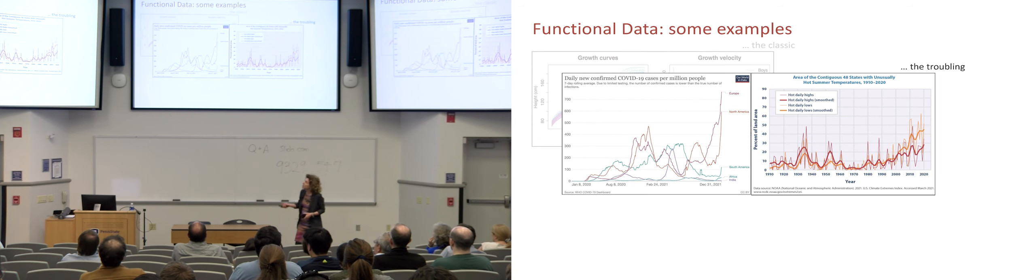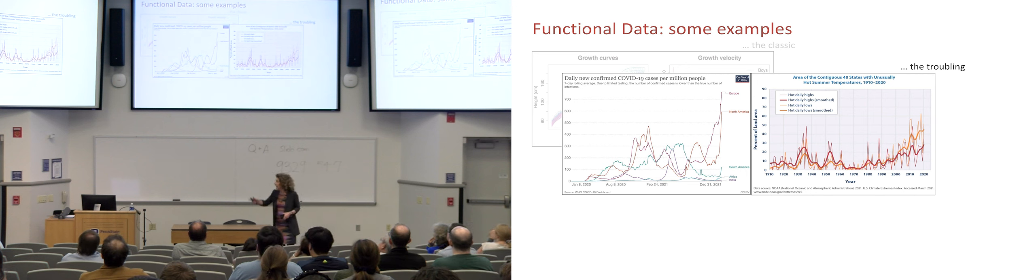The second type of examples I'm going to mention, I'm calling the troubling. These are curves that we have all become very familiar with, sadly, in the last years. On the left, you see case curves describing the COVID-19 epidemics in various parts of the world. And on the right, you see curves associated with climate change, temperatures in particular. Those represent the portion of the US land area that were affected by overly high temperatures, as this portion evolved over time.